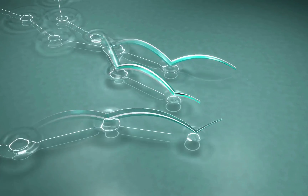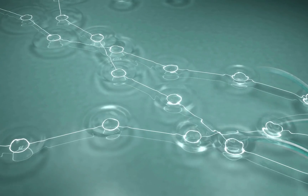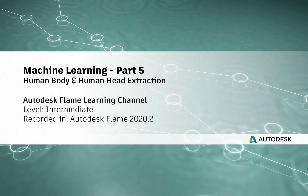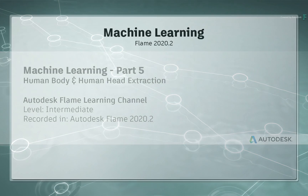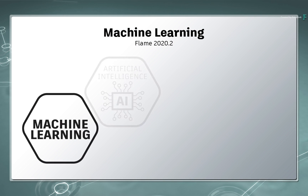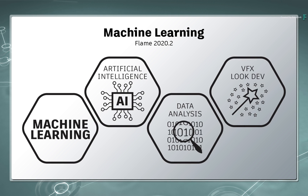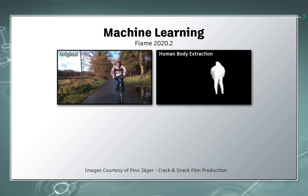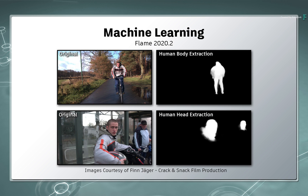Hi everyone, Grant for the Flame Learning Channel. With the Flame 2020.2 update, two new Machine Learning models have been introduced into the Flame products. Part 5 in the Machine Learning series introduces Human Body Extraction and Human Head Extraction.